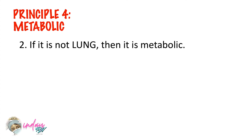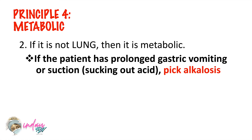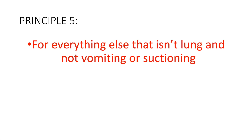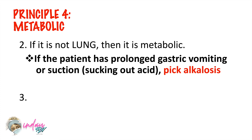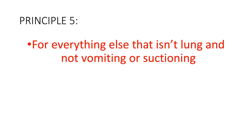The next principle is metabolic: if it's not lung, then consider it to be metabolic. If the patient has prolonged gastric vomiting or suctioning, pick alkalosis. Why? If there is prolonged gastric vomiting, you are removing the acid inside the patient's GI tract. And if you are doing suctioning, you are also removing acid. So consider it to be alkalosis. Principle number four: if it's not lung, then it's metabolic. Principle number five: for everything that is not lung and not vomiting or suctioning, consider it to be metabolic acidosis. If it's not lung and there is prolonged vomiting or suctioning, that is metabolic alkalosis. But if it's not lung and there is no vomiting or suctioning, that is metabolic acidosis.